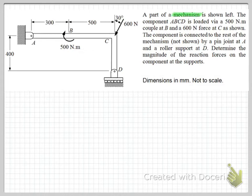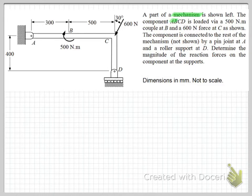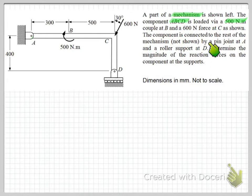So we have a part of a mechanism that's shown at the left here. We've got this diagram to represent some sort of a mechanism. The component that we're considering is A, B, C, D. We have a 500 newton metre moment applied, a 600 newton force applied at C, and information about how the mechanism is connected to other parts not shown.